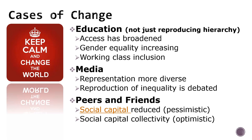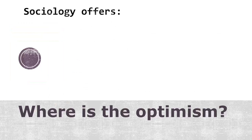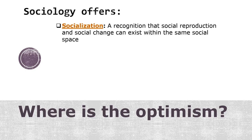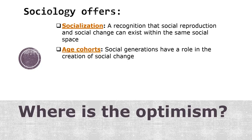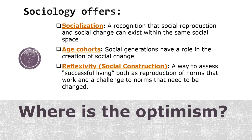Recent student marches and their dependency upon social media to support each other may be an excellent example of Holmes' idea here. Where is the optimism? What does sociology have to offer? The sociologist's understanding of socialization can provide a key not only to how society is reproduced — which can be somewhat pessimistic — but also how these agents can affect social change and lead to a more optimistic view. Because social generations have a role in the creation of social change, sociologists are the best source of understanding these age cohorts. Sociologists are also astute at understanding how things are socially constructed, including changes and challenges to norms.